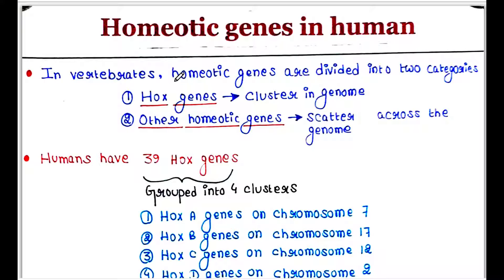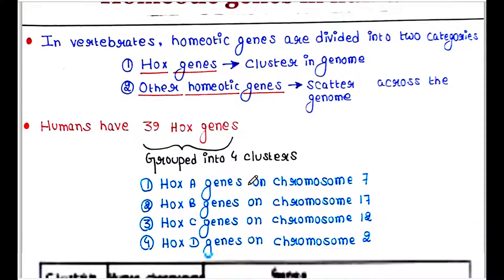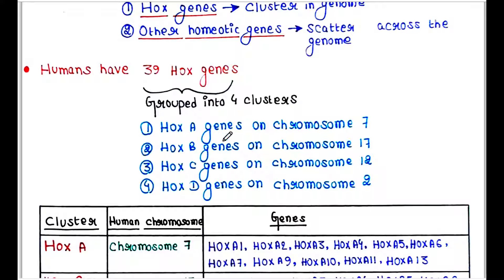In vertebrates, homeotic genes are divided into two categories. The first one is the Hox genes, which are clustered in the genome. The second one is other homeotic genes, which are scattered across the genome. Humans have 39 Hox genes grouped into four clusters: Hox A on chromosome 7, Hox B on chromosome 17, Hox C on chromosome 12, and Hox D on chromosome 2.